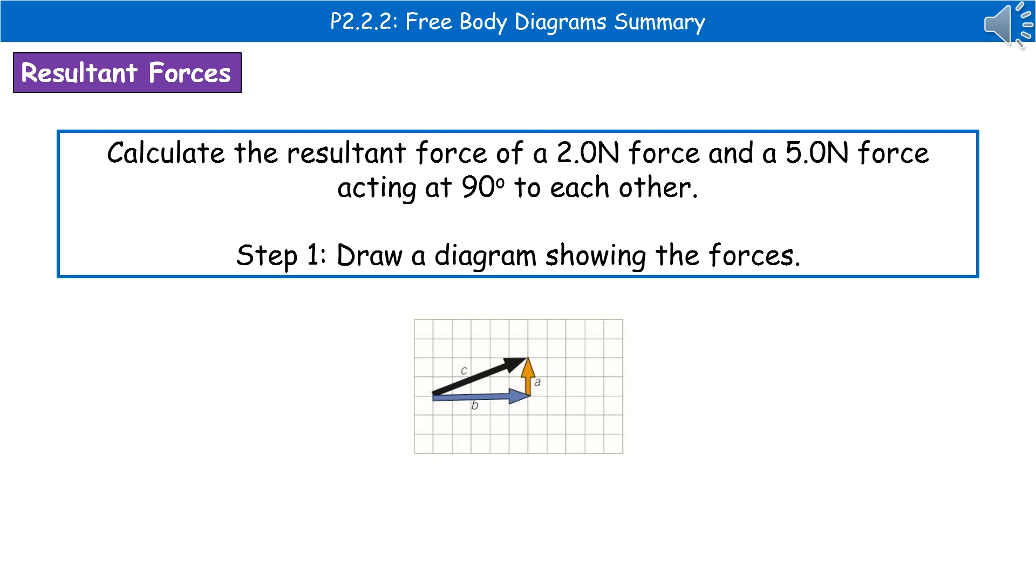The five newton force is represented by B on the diagram there. Remember to use a scale. They've given you graph paper because they want you to use the number of squares. Then a two newton force at 90 degrees is A.